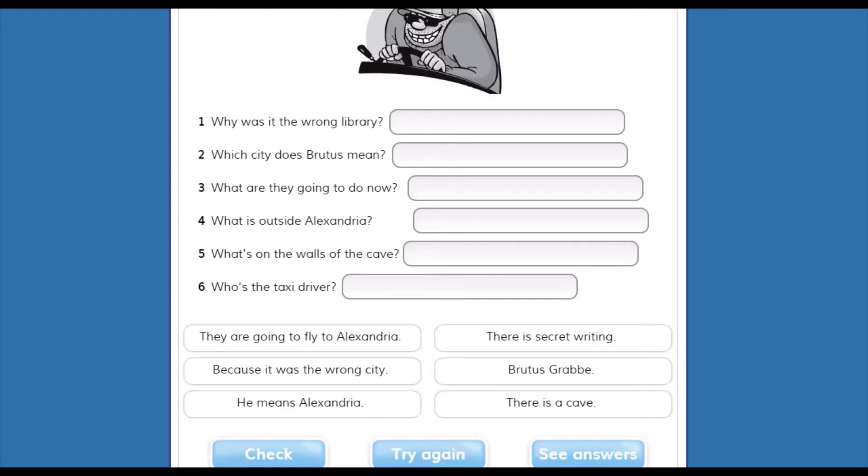Number one. What was in the wrong library? ¿Por qué estaban ellos en la biblioteca incorrecta? They are going to fly to Alexandria because it was the wrong city. He means Alexandria. There is a secret writing. Brutus grave. There is a cave. What is the correct answer? It's because it was the wrong city.